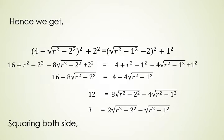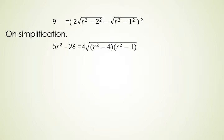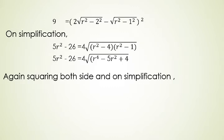On simplification we will get this 5R square minus 26 is equal to 4 under root R square minus 4 and R square minus 1. Again squaring both sides and on simplification we will get this equation. This equation R to the power 4 minus 20R square plus 68 is equal to 0 is quadratic in R square.